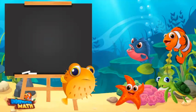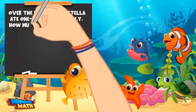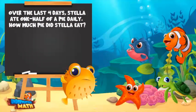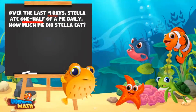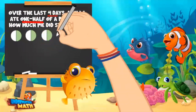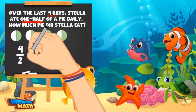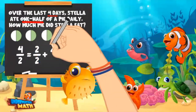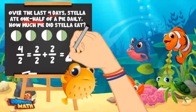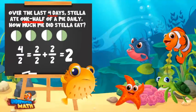Let's try another one together. Sir Puffington, I have a story problem. Over the last four days, I ate one half of a pie daily. How much pie did I eat in total? I think the important parts are the four days and half a pie. I think we multiply one half by four, which equals four halves. If we convert four halves from an improper fraction, we get two whole. You ate two whole pies.